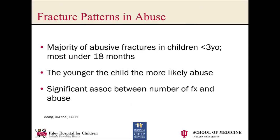There are some patterns more suggestive of abuse. In general, abusive injuries occur in children younger than three years of age, with most happening in children less than 18 months. The younger the child, the more likely it is to be an abusive injury. There is also a significant association between the number of fractures and abuse. So if you see more than one fracture, you need to be suspicious — or if you see a fracture combined with a belly injury or head injury, especially in the absence of a compelling trauma history like a motor vehicle collision.